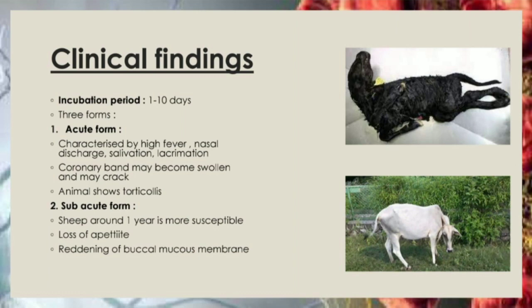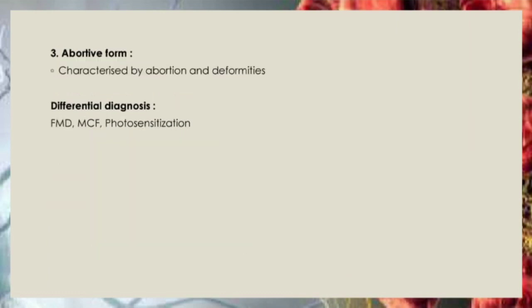In the subacute form, sheep around one year of age are more susceptible. There is a high rise of temperature, loss of appetite, redness of the buccal mucous membrane, and muscular weakness and stiffness of joints may occur. The abortive form is characterized by abortion and deformity, including agnathia and prognathia. This disease can be differentiated from foot and mouth disease and malignant catarrhal fever.